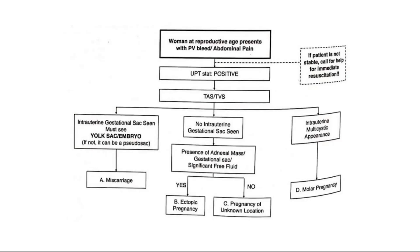This is a simplified flowchart of the management of early pregnancy bleeding. When a woman of reproductive age presents with PV bleed or abdominal pain, if she is in a stable condition, do a urine pregnancy test stat. If not stable, call for help immediately for resuscitation. If the UPT is positive, do a transabdominal or transvaginal ultrasound to look for an intrauterine gestational sac — confirm with a yolk sac or embryo, as otherwise it may be a pseudosac.